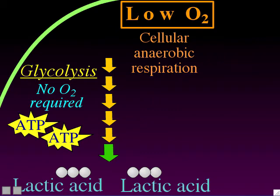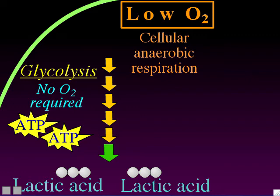Cellular anaerobic respiration has one huge advantage: the cells are still able to make ATP even if there's no oxygen. Picture your muscle cells — if they can't get enough oxygen from your blood to do aerobic respiration, and they didn't have anaerobic respiration available, they just wouldn't be able to make any ATP at all. Without ATP, your muscles couldn't contract, and you'd be paralyzed any time your blood got low on oxygen. So it's a huge advantage — it's very important that your muscles can switch into anaerobic respiration and allows you to keep doing activity even when blood gets low on oxygen.